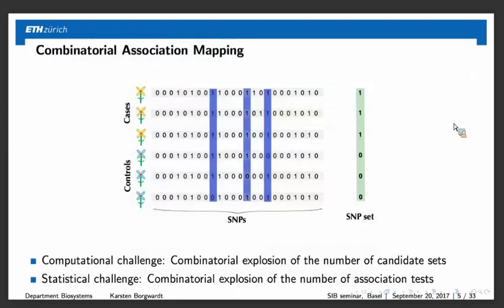Why can't we do it easily? This form of searching genome-wide for interactions is an extremely challenging problem, both from the computational and from the statistical side. If we refer to this approach as combinatorial association mapping, we have to realize there is a huge computational challenge: we face a combinatorial explosion of the number of candidate sets of SNPs that could be associated with the phenotype. There is also a huge statistical challenge — a combinatorial explosion of the number of association tests that we perform.